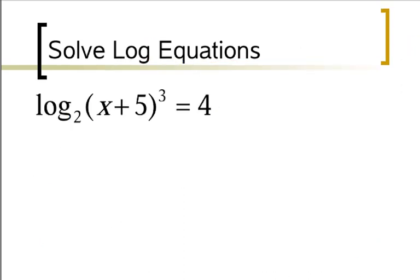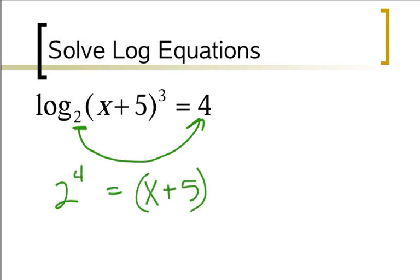Let's take a look at one that's a little bit more complicated, not much more. We've got to take 2, raise it to the 4th power, so 2 to the 4th power equals x plus 5 to the 3rd. Now this time, we actually need to get rid of the cube.